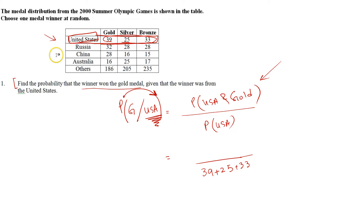Whenever they ask this type of question: see what is written after 'given that' — that is USA — write its total in the denominator. Then from USA, how many got gold medals? Write that on top. So 39 divided by (39 + 25 + 33) = 39/97 is the final answer.